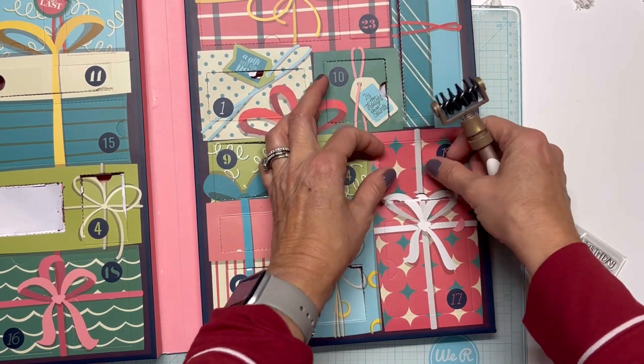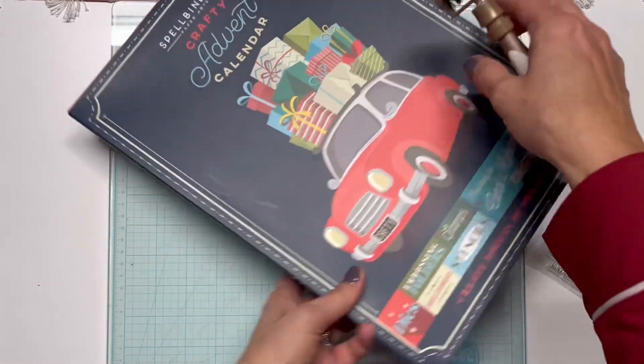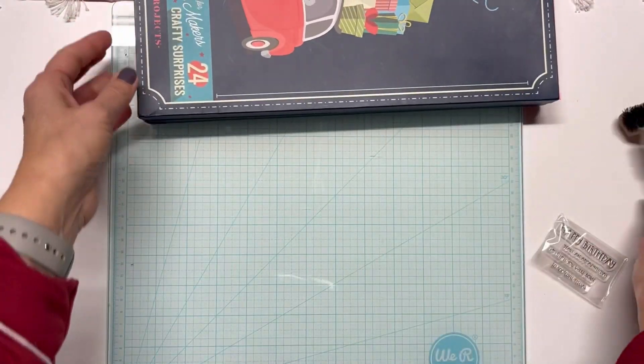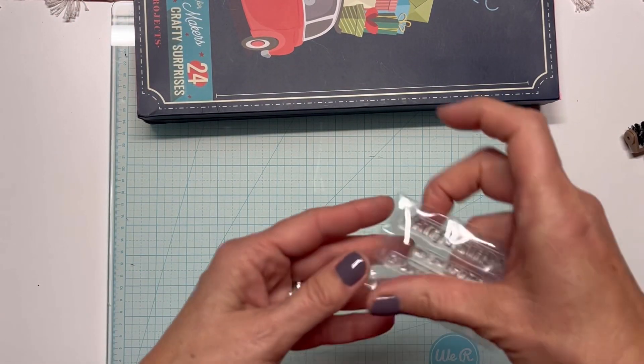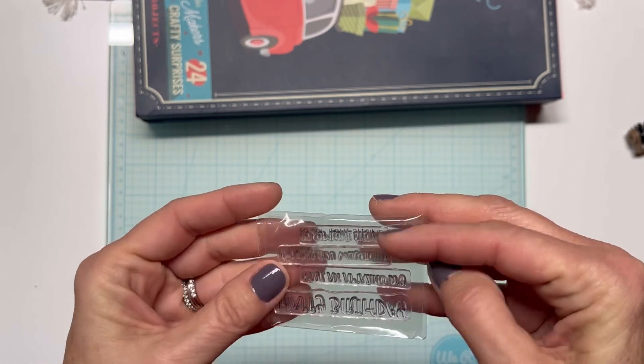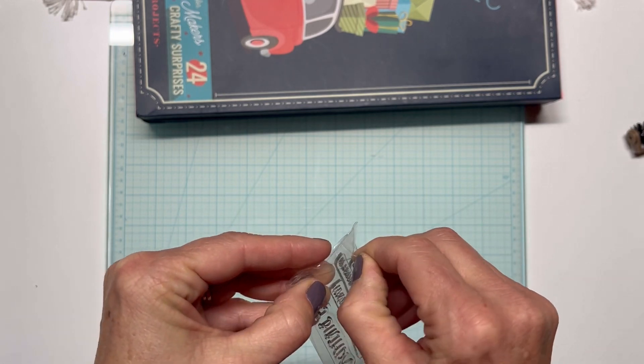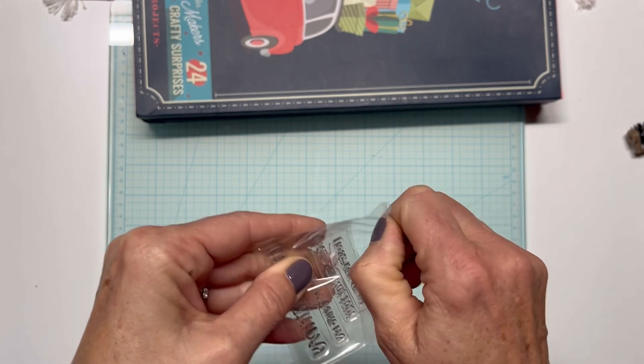As soon as I saw this I immediately started thinking about our balloons and our ribbon and bow from our previous days. So I'm just going to take this stamp set out of the package and we're going to bring the Misti in and get to making a birthday card.